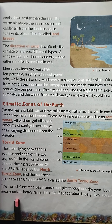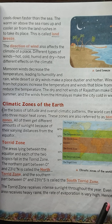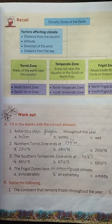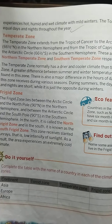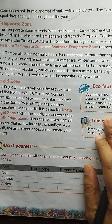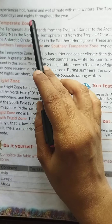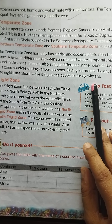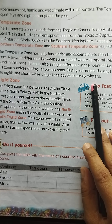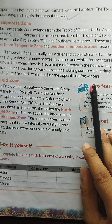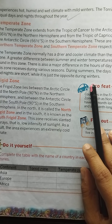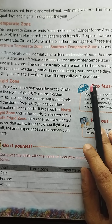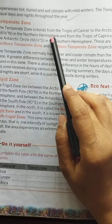The torrid zone receives intense sunlight throughout the year. Even though the area receives heavy rains, the rate of evaporation is very high. Hence, this zone experiences hot, humid, and wet climate with mild winters. The torrid zone has equal days and nights throughout the year. The equatorial region gets the vertical rays of the sun, so this area is very hot throughout the year.